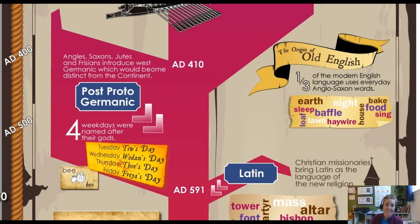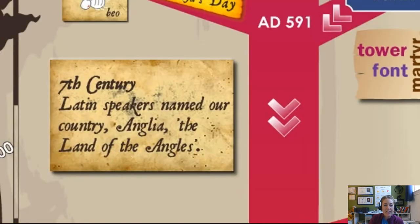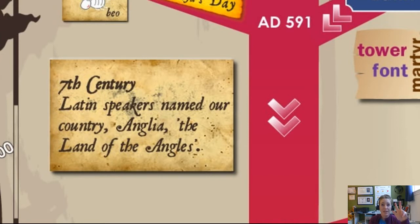So at this point you've had the Celtic speakers invaded by the Romans, which brought in some Latin, then the Romans left. Then we had these Germanic speakers — the Angles and Saxons — come in, giving us three touch points creating this language. Around the 7th century, Latin came back into the country again; it had left with the Romans when their empire crashed, but it came back.